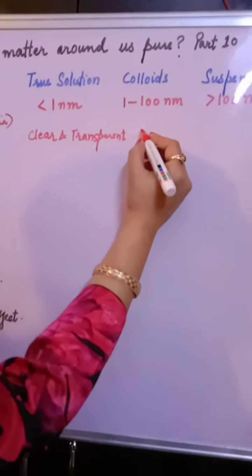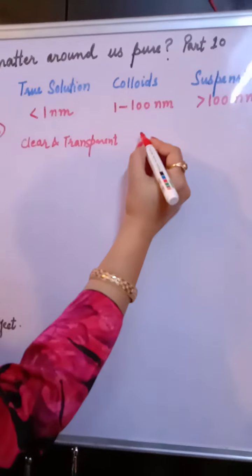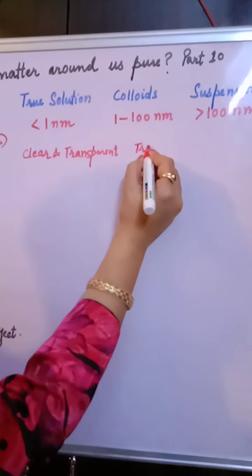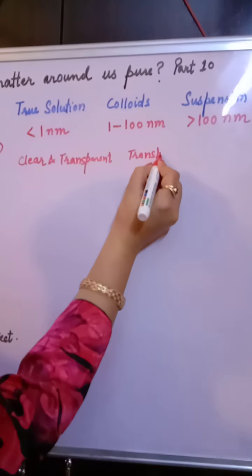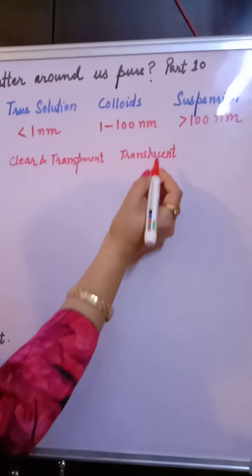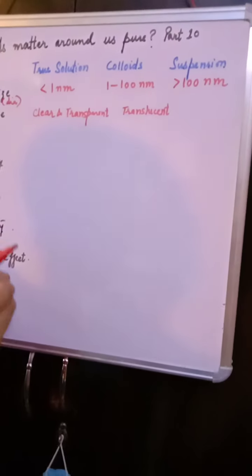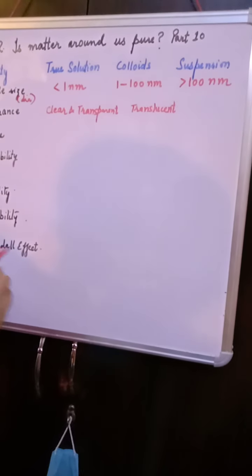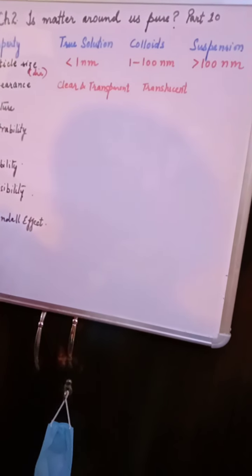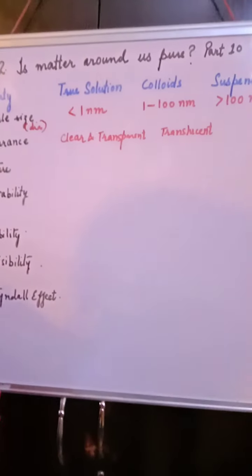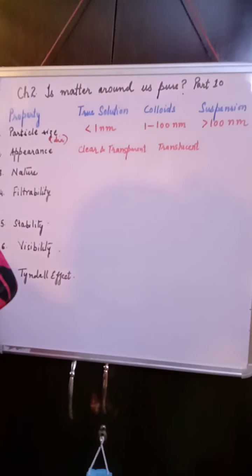In case of colloids, the appearance is actually translucent. When you throw light with the help of a torch, the light is able to pass through it, but not completely. So the appearance of colloidal solutions is translucent.